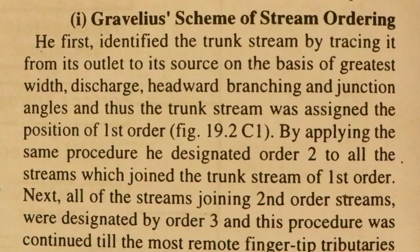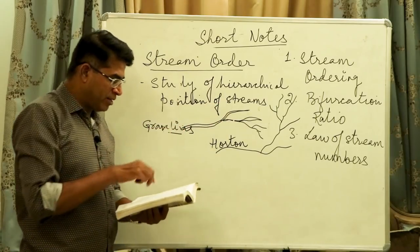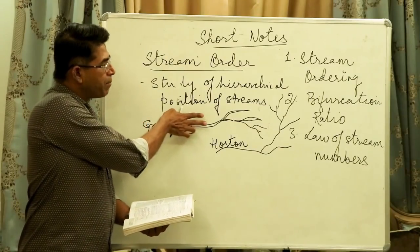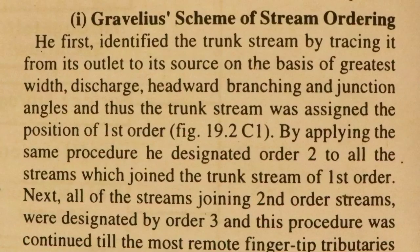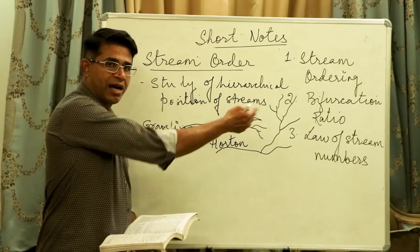In the Gravelius scheme, he first identifies the trunk stream — the main river — by tracing it from its outlet upward to its source on the basis of the greatest width, discharge, headward branching, and junction angles. The trunk stream is assigned the position of first order. So the main river is said to be first order, and thereafter the other rivers are numbered.